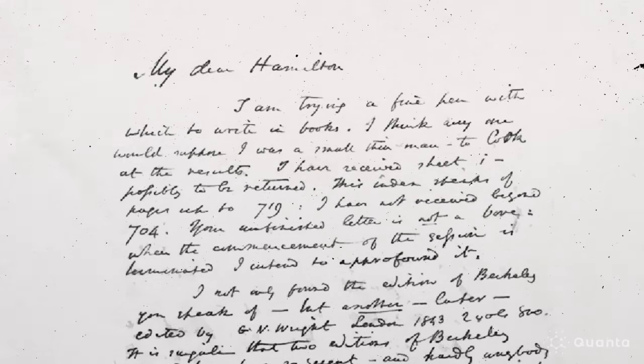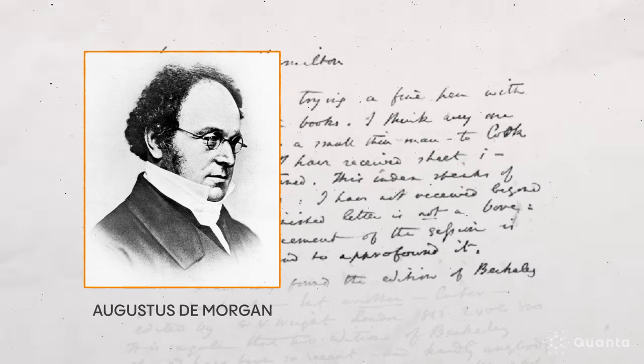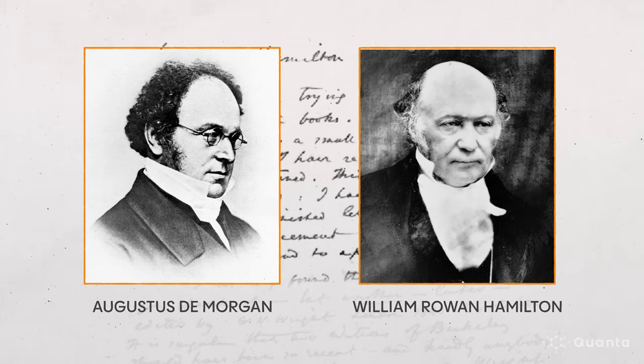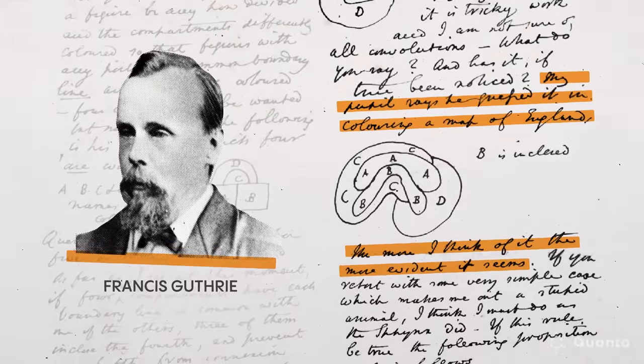In 1852, Augustus de Morgan, a professor at University College London, brought up the map coloring problem in a letter to his friend and the mathematician Sir William Rowan Hamilton. It was de Morgan's former student Francis Guthrie who first posed the question.